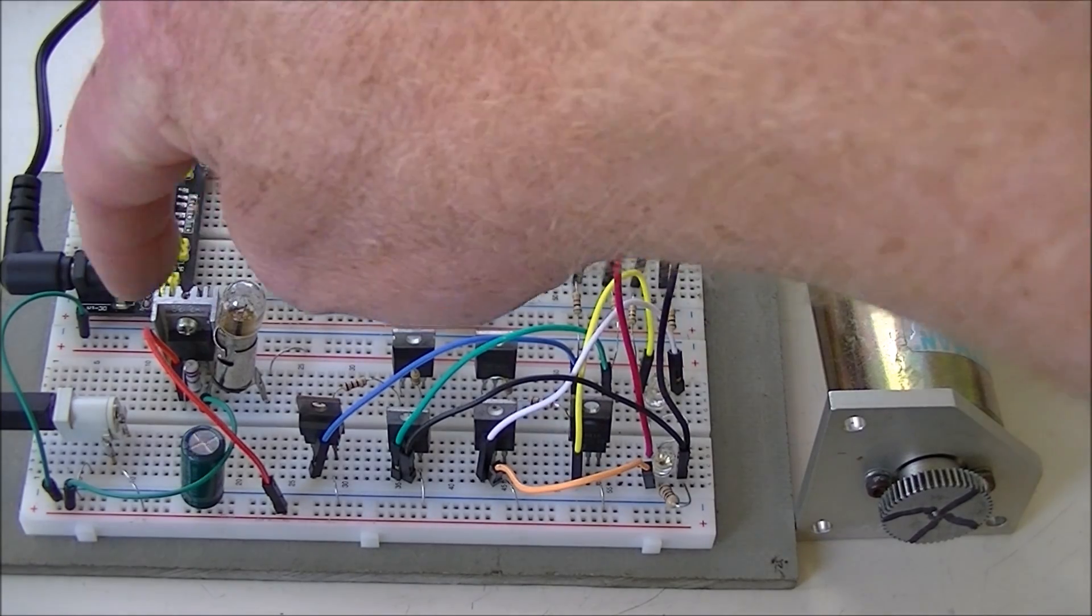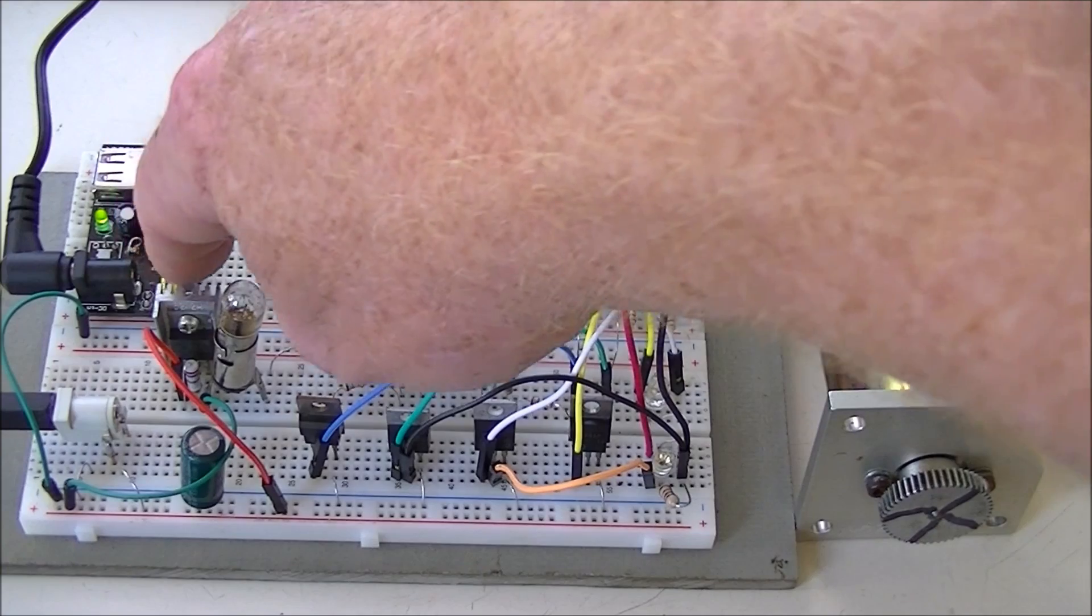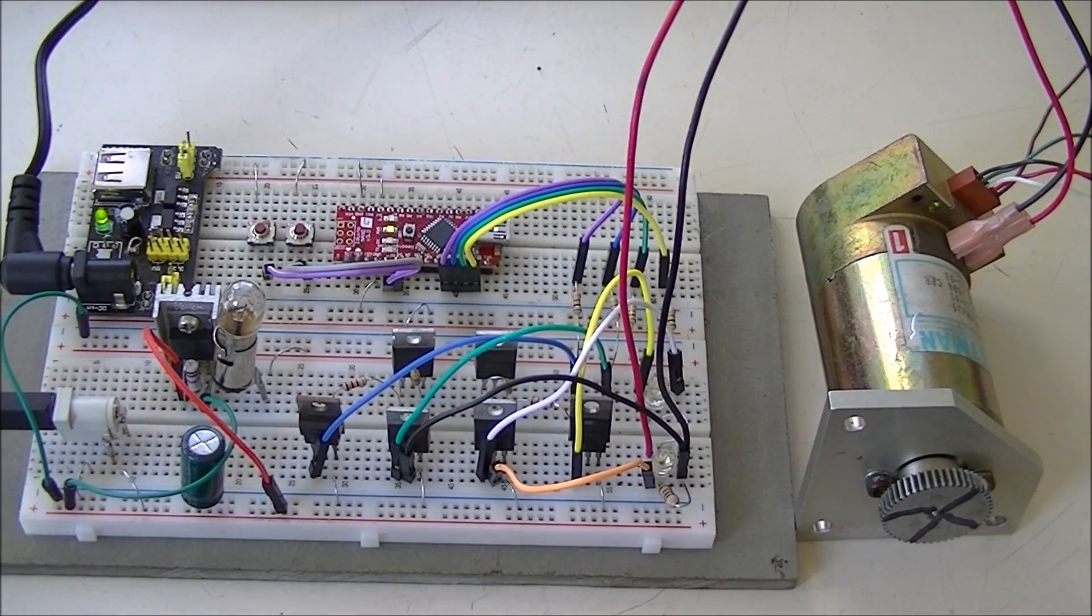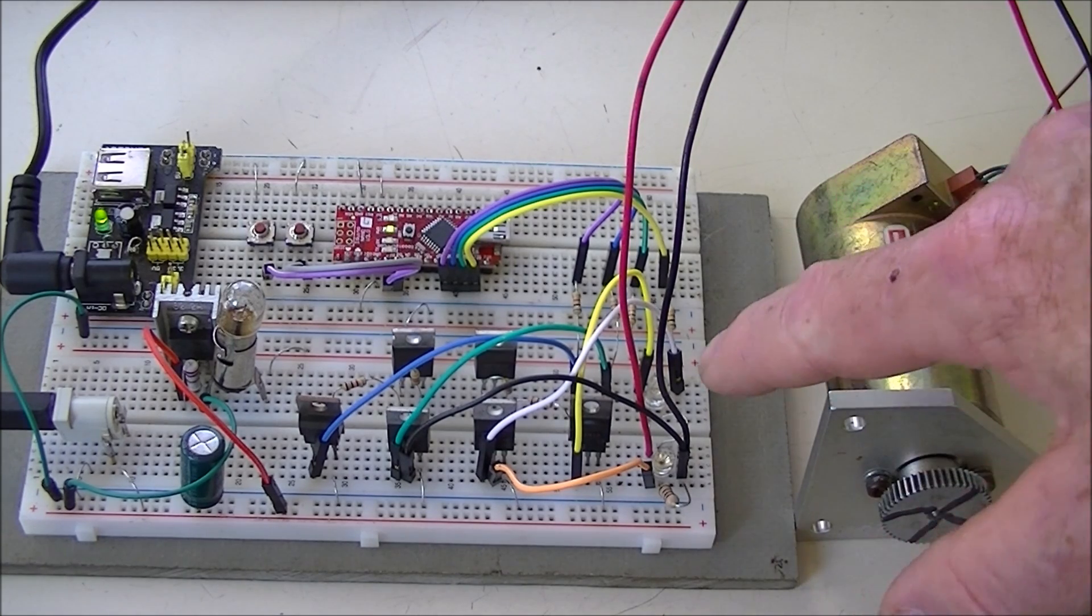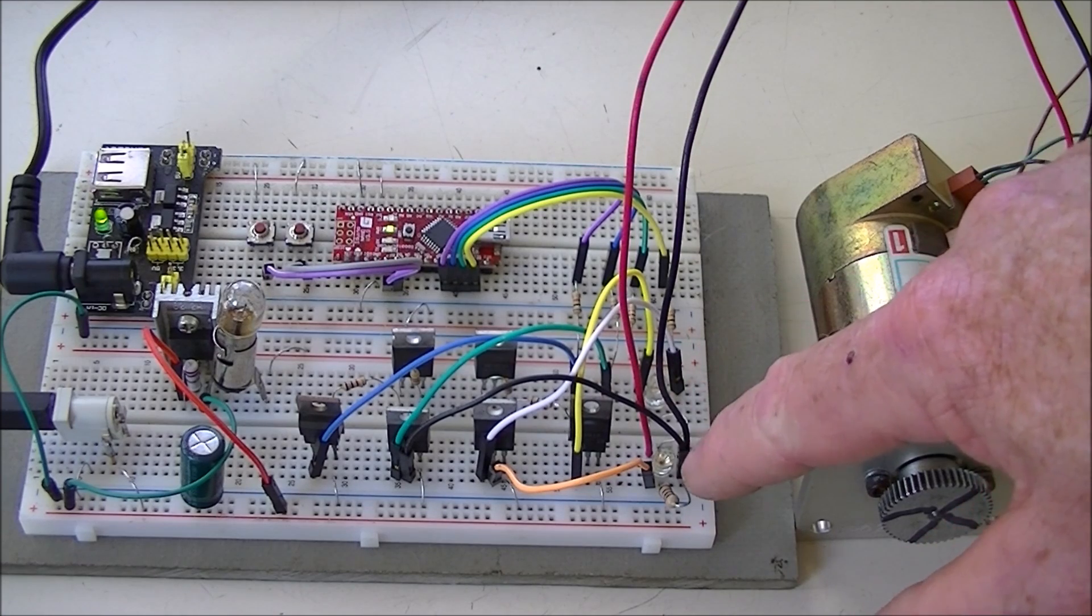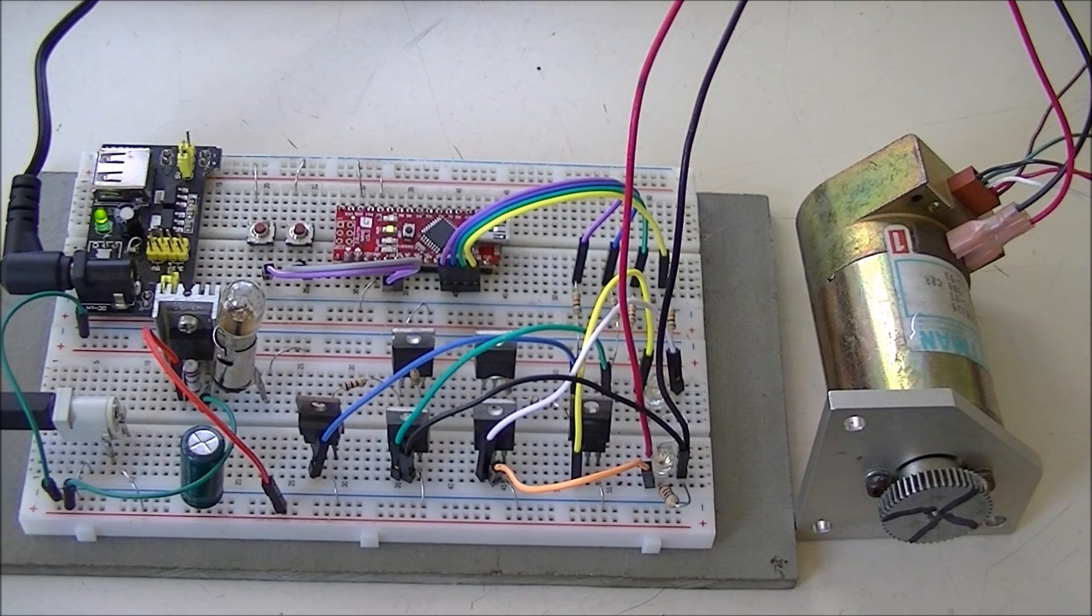Here we have, again, my current limiting circuit. This is what you need to do when you assemble these things, is to use a current limited power supply until you're sure the circuit's working properly. And of course here again we have two LEDs back to back that are polarity indicators.